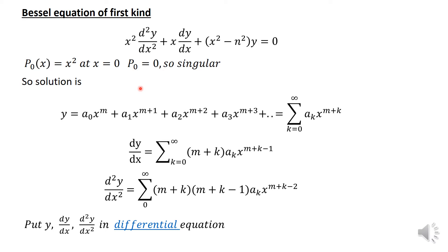This means the solution will be of singular type. The solution of this differential equation will be of the form y = a₀x^m + a₁x^(m+1) + a₂x^(m+2) + ... In general, we write the sum of aₖx^(m+k) for k equal to zero to infinity, because if we put k equal to zero it gives a₀x^m.